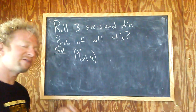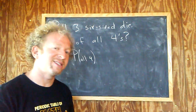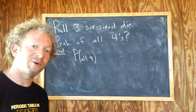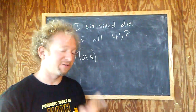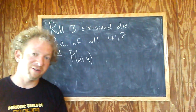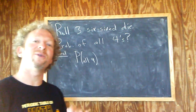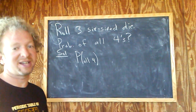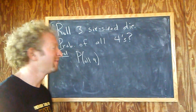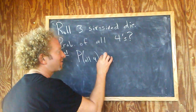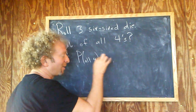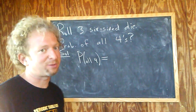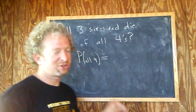If every single die is going to land on a four, that means the first die has to be a four, and the second die has to be a four, and the third die has to land on four. So whenever there's an 'and,' you multiply — it's the multiplication rule.